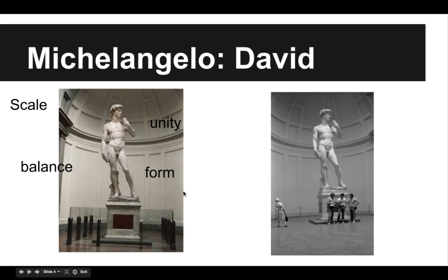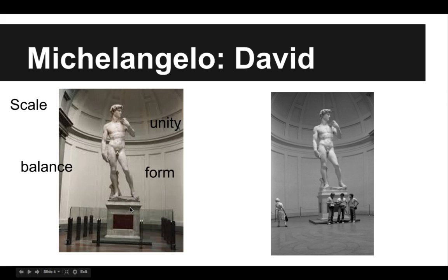Then there's form. Shape is when we're talking about two-dimensional objects, and form is when we're talking about three-dimensional objects. This is a three-dimensional sculpture, and looking at all of the forms working together, those forms are also creating unity. Part of the reason those forms create unity is that they appear to be in proportion to each other — they're making sense up against the next one.